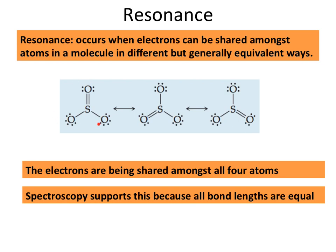We're representing that by showing all three resonance structures. The arrows in between represent the interchangeability and basically represent the sharing. The reality of it is — what we see spectroscopically when we actually analyze this type of structure — is a single bond length. We don't see two single bonds and a single double bond. What we actually end up seeing is a bond peak for basically one and a third. Resonance shows up in molecules that can have multiple bonds to various atoms that are interacting in a compound.